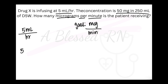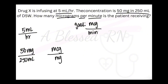We have 5 milliliters per hour as the rate, and then we have 50 milligrams in 250 mLs of D5W as our medicine. We are looking for micrograms, but we don't have micrograms, so we'll use a conversion. I'll put micrograms on the top and milligrams on the bottom — 1000 micrograms is one milligram.